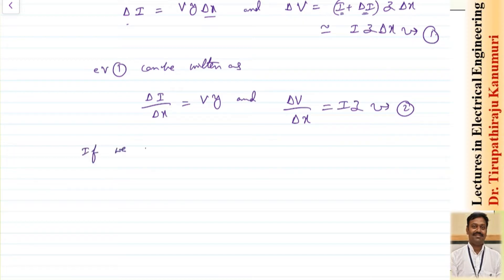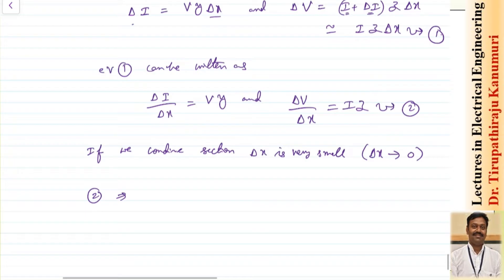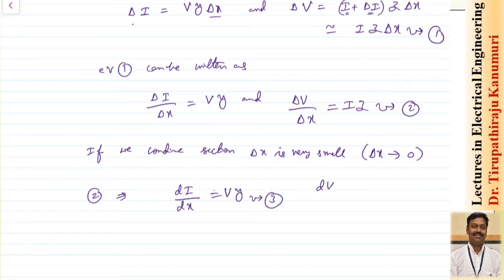If we consider the section delta x where the differential length is very small — that is, delta x approaches zero — then equation two becomes a differential equation. delta i / delta x becomes di/dx = v·y, which is equation three, and dv/dx = i·z, which is equation four.